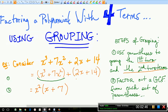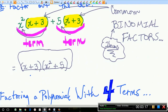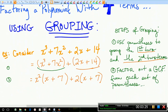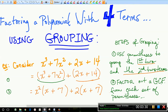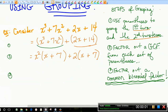Now do the same for the second grouping: 2x + 14. The GCF of 2x and 14 is 2. Once we factor out that 2, what's left is x — since 2 times x is 2x — plus 7, since 2 times 7 is 14. Now if you were paying attention to the previous example, this should look familiar — we have what are called common binomial factors showing up.